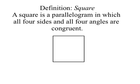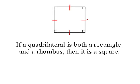Now let's look at squares. A square is a parallelogram in which all four sides and all four angles are congruent. You can prove it by the reverse of the definition, and you can also prove a quadrilateral is a square if you can prove that it is both a rectangle and a rhombus.